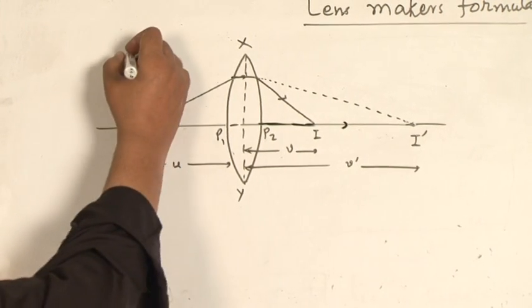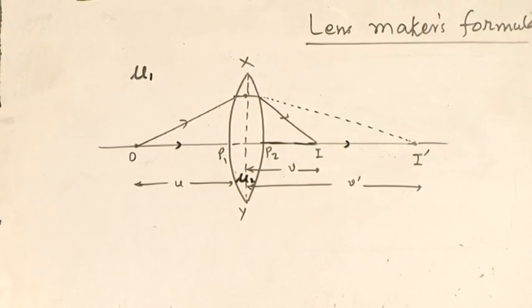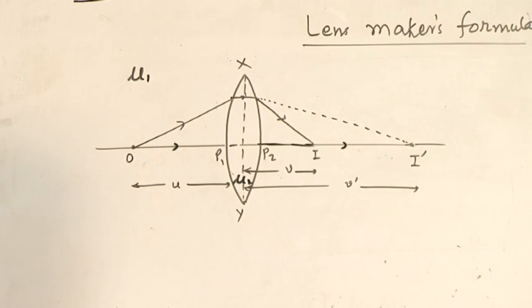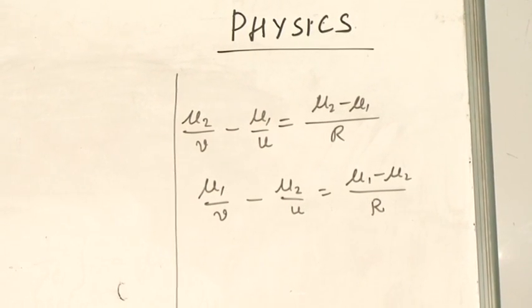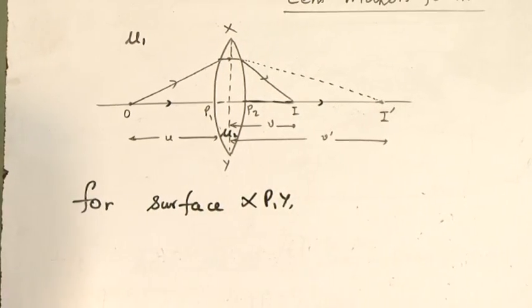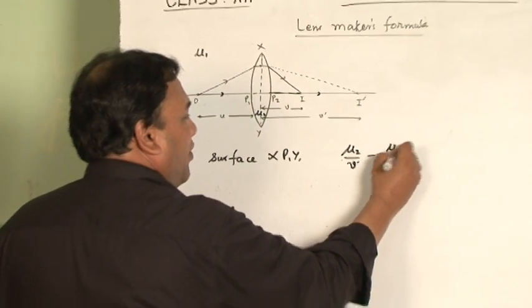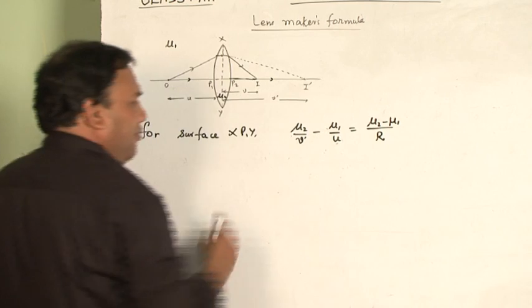The refractive index of the surrounding medium is μ1 and the refractive index of the lens is μ2. Since refraction is taking place from rarer medium to denser medium, I can use the refraction formula: μ2/v minus μ1/u equals (μ2 minus μ1)/r. So for surface XP1Y, I write this equation as μ2/v' minus μ1/u equals (μ2 minus μ1)/r1. Here v' is the image distance.